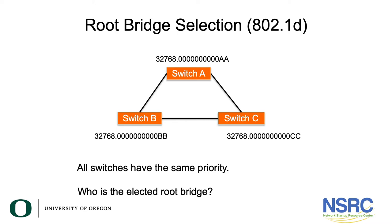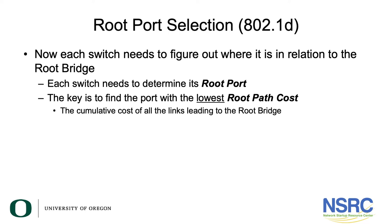In this example, we have three switches — A, B, and C — all with the same priority of 32768. Switch A has a MAC address ending in AA, Switch B in BB, and Switch C in CC. Since they all have the same priority, the one with the smallest MAC address wins. Switch A is elected root bridge because AA is smaller than BB and CC in hexadecimal.